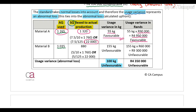The same logic applies to material B. If they actually produced 22,000 units, they should have used 880 kilograms, but they actually used 1,035 kilograms. Because they used more than they should have, this variance is unfavorable — 155 kilograms unfavorable. To get the rand value, multiply by the standard price per kilogram.